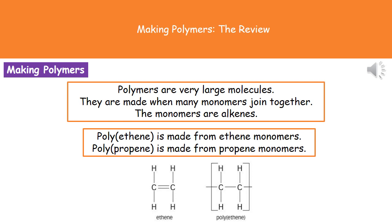If we need to write the name of a polymer, all you do is look at the monomer name and write the word 'poly' in front of it. So if we had styrene monomers and wanted to know the name of the polymer, it would be polystyrene.